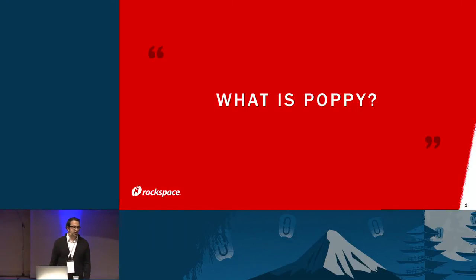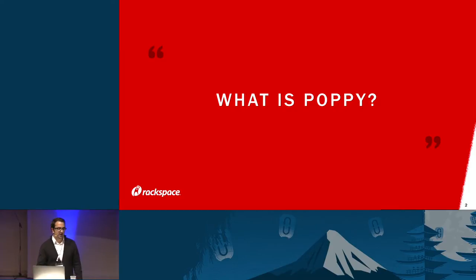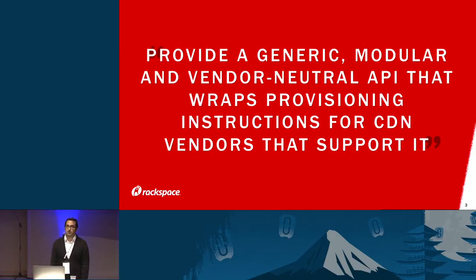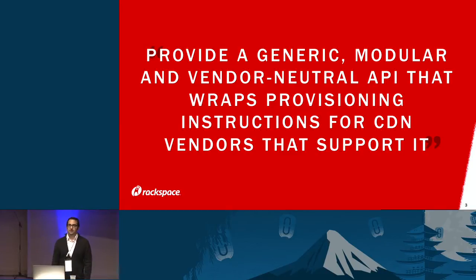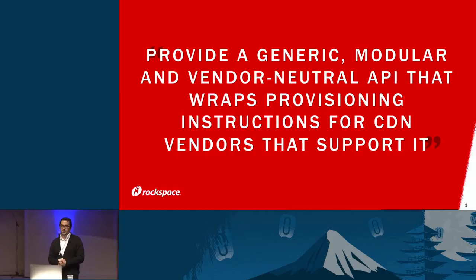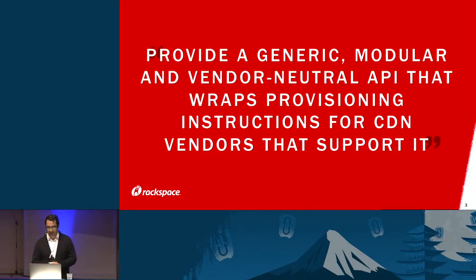So what is Poppy? CDN for your cloud. This is our mission statement. We want to provide a generic, modular, and vendor-neutral API that wraps provisioning instructions for CDN vendors that support it. In a nutshell, it's like many of the other OpenStack projects that integrate with third-party vendors. We want to integrate with companies like Akamai, with Fastly, Amazon has CloudFront, and we want to unify the APIs that they provide.